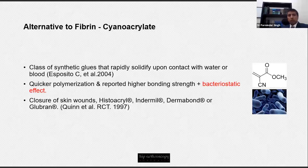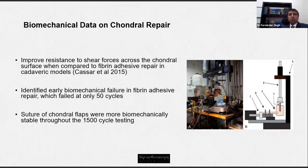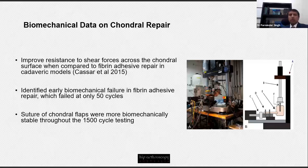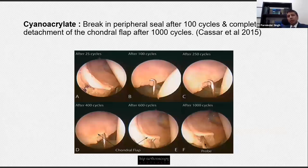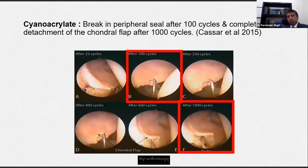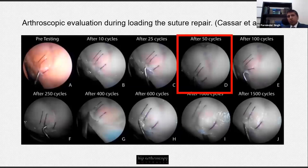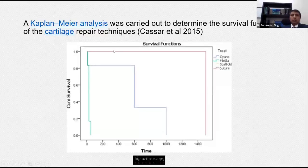Kaser recently reported a biomechanical study comparing the durability of fibrin glue, cyanoacrylate, and suture repair techniques for wave sign in the lab. They found that fibrin glue only withstood 25 to 50 cycles; cyanoacrylate showed some early signs of failure after 100 cycles but was durable up to 1,000 cycles; while the suture technique showed a little suture cut-out at 50 cycles but was durable up to 1,500 cycles. The graph shows the suture technique was the strongest and most durable, cyanoacrylate second, and fibrin glue the least durable.